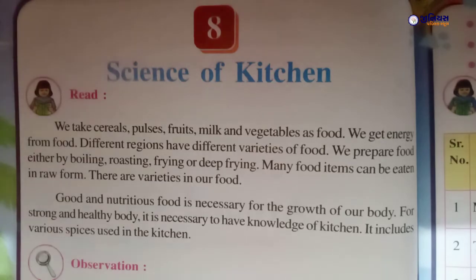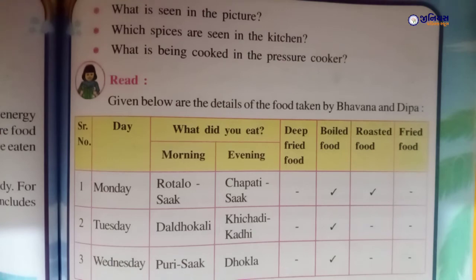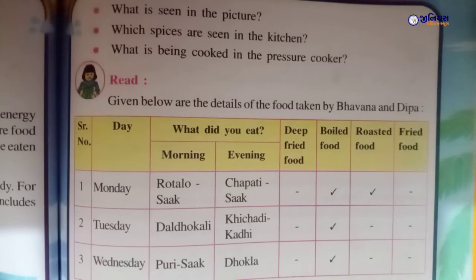Observation activity: One lady is making food on the gas stove. There is a lot of water in the kitchen. There are a lot of spices in the kitchen. What is being cooked in the pressure cooker?